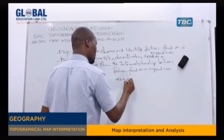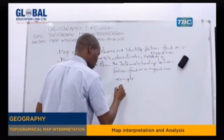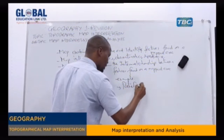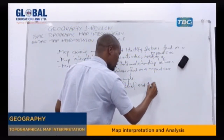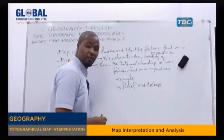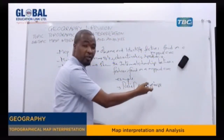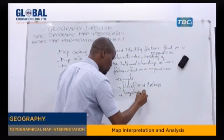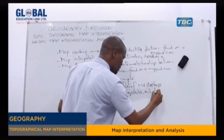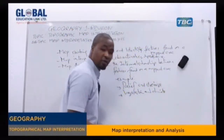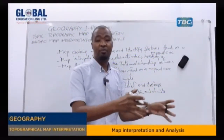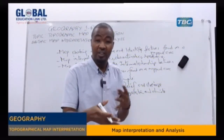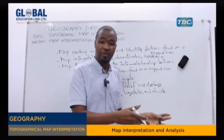For example, you want to know the relationship between relief and drainage — there is a relationship between relief and drainage. There is also a relationship between vegetation and the climate. Why is there this type of vegetation? There is this type of vegetation because it is influenced by, or there is a relationship between, the climate of a given map area.